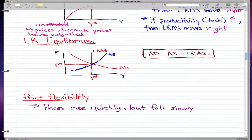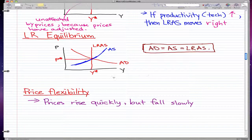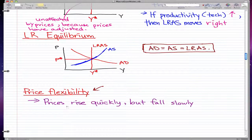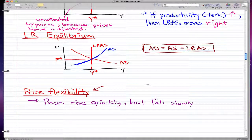And last is price flexibility. I'm going to try to make this video super short. So price flexibility—the main thing you gotta know is that prices rise quickly but fall slowly.